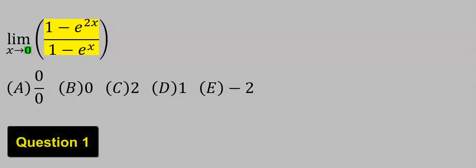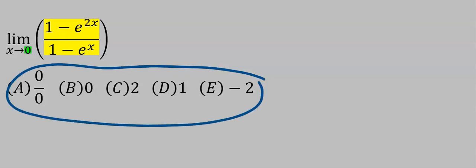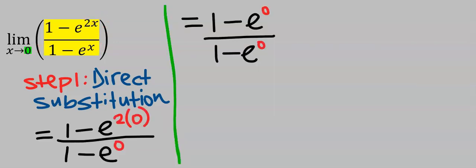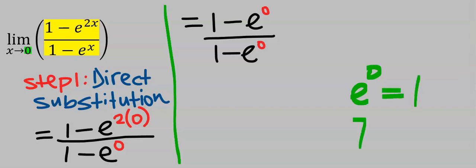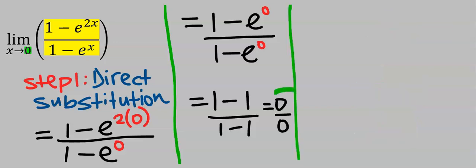Let's consider this question: what is the limit of this function as x tends to zero? To solve this, we choose from the given options. Step one: apply direct substitution — replace x with zero. Two times zero is zero, and seven to the power of zero is one. However, zero cannot raise itself, so we get zero over zero, which is undefined.